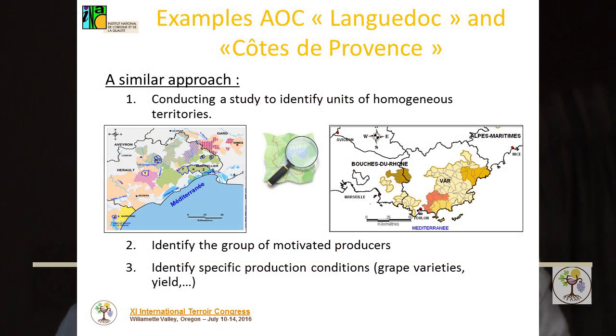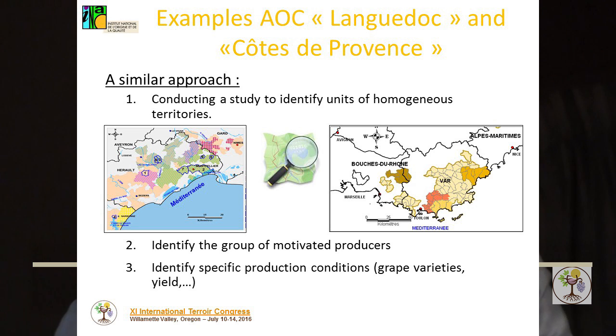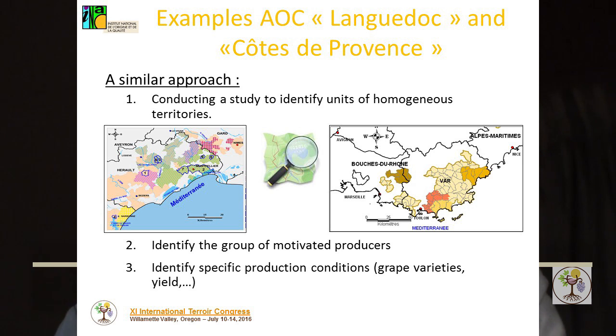The approach for recognition of CGD is the same in both cases. Firstly, conducting a study to identify units of homogeneous territories. Secondly, identifying the group of motivated producers. And finally, identifying specific production conditions.